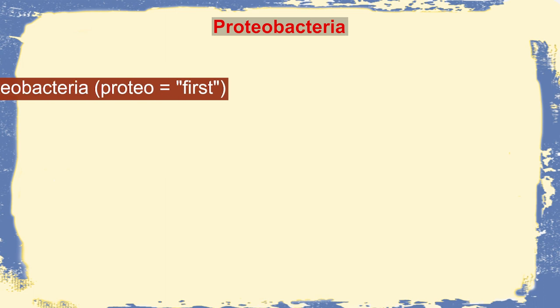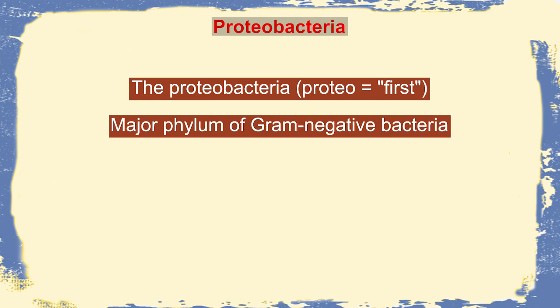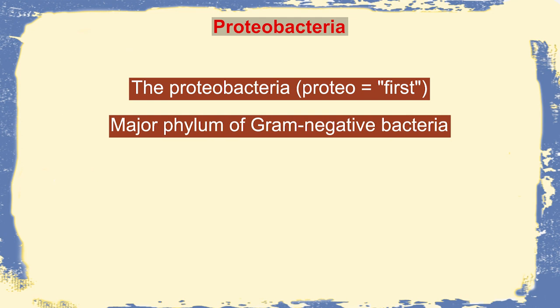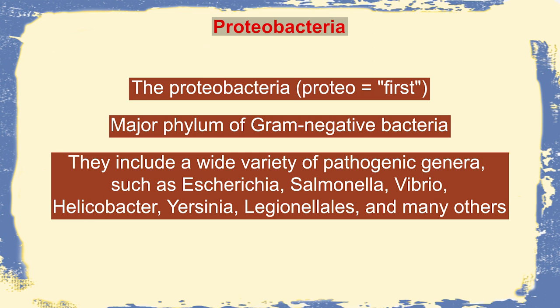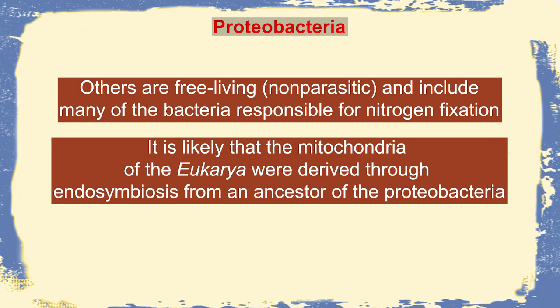The next category is Proteobacteria — 'proteo' meaning first, indicating they emerged first. It is the major phylum of Gram-negative bacteria and includes a wide variety of pathogenic genera such as Enterobacteriaceae, Salmonella, Vibrio, Helicobacter, Yersinia, and many others. Others are free-living and non-parasitic, including many bacteria responsible for nitrogen fixation. It is thought that the mitochondria of Eukarya were derived through endosymbiosis from an ancestor of Proteobacteria.